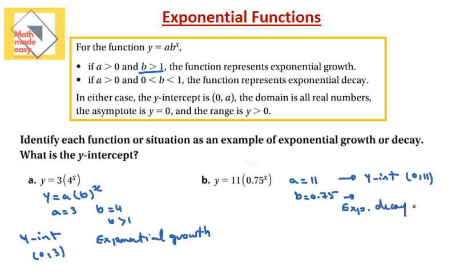We will stop here. We have discussed what it means to have exponential growth and exponential decay, how the function will look, the rule and how the base affects growth or decay, why the base cannot be negative, and why the base cannot equal 1. We have also seen what the y-intercept of an exponential function is, how to find it, and the domain and range when there is no transformation. I hope this has been helpful for you, and thank you so much for watching.